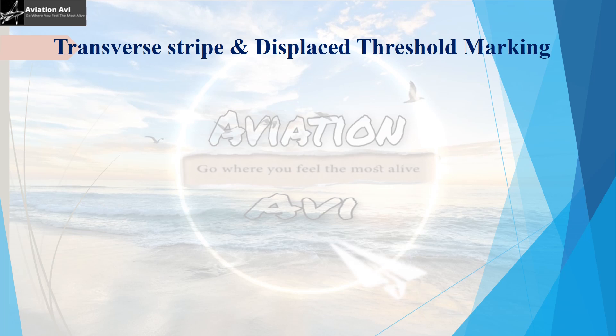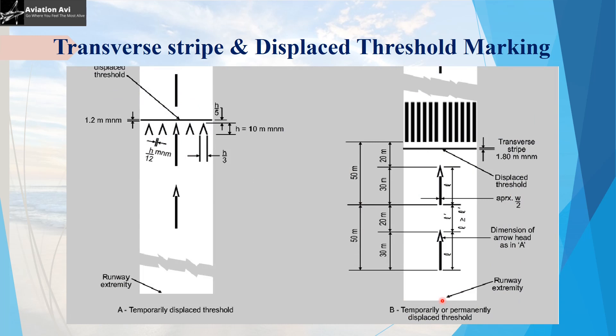The next marking is the transverse stripe and displaced threshold marking. When the runway threshold is not at the runway extremity or is not square with the centerline, a transverse stripe of width 1.8 meters is added to the threshold marking. If the threshold is temporarily displaced, all markings before the threshold are obliterated except the runway centerline marking, which is converted into arrows to indicate to approaching aircraft that the threshold is displaced.